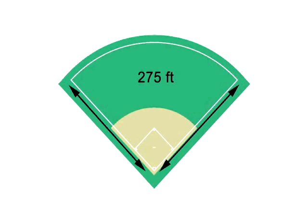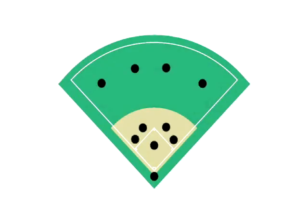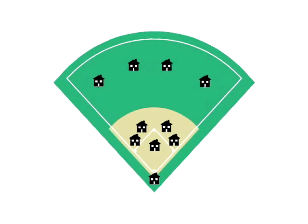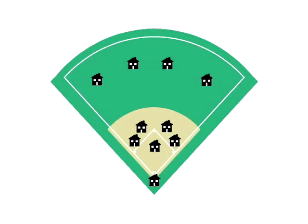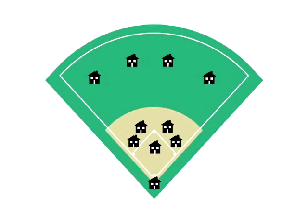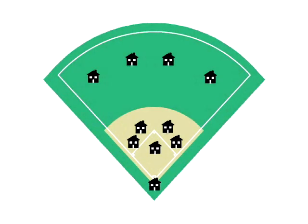How many defensive players are on a softball team at one time? There are ten — if you recall, there's an extra defenseman called a rover. Envision where those ten people are lined up on the field. We want to have a quail house, or protective covert, located everywhere we've got a defensive player. We ought to be able to throw that softball in the air from one quail house to the next — just like players throwing around the horn after making an out.